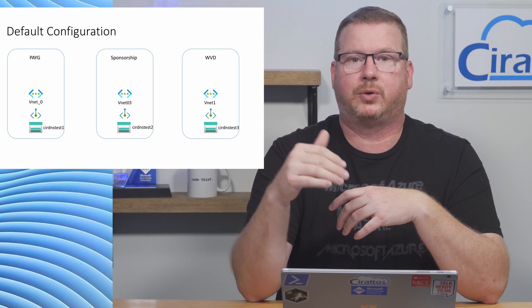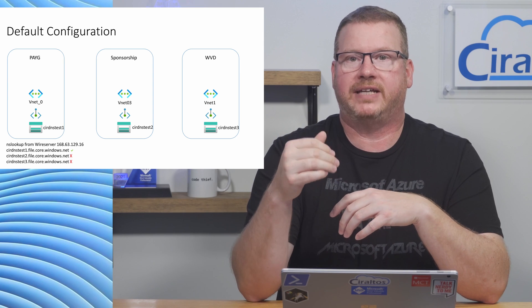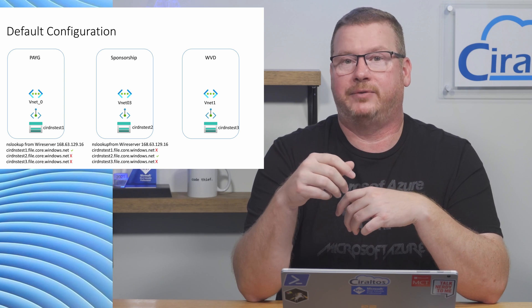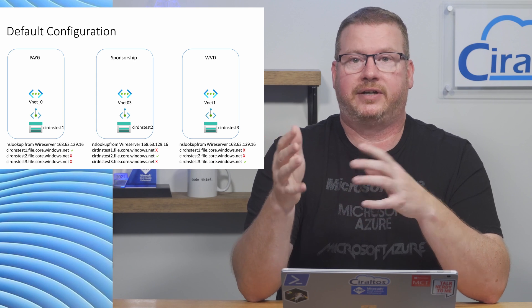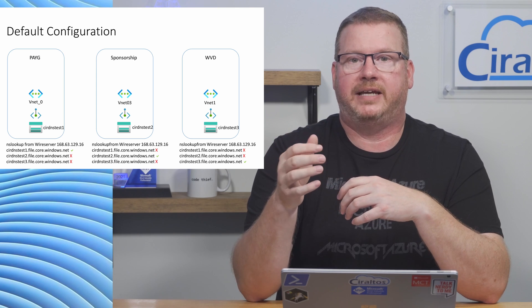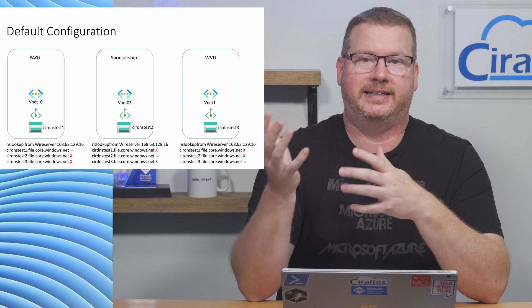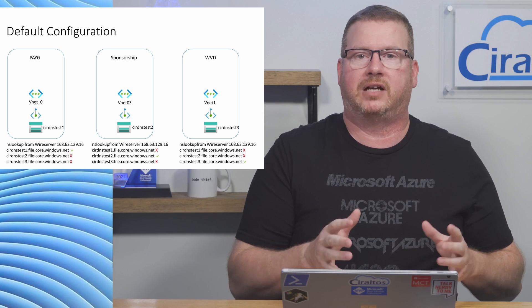Let's review private endpoints and DNS quickly before we set up the solution. This example will use three subscriptions, each with a VNet and a storage account attached to that VNet. By default, we can resolve the private endpoints attached to each VNet from that VNet with the wire server IP address. The wire server IP is a special IP address that services in Azure interact with — it's a public IP address only available from Azure that provides services such as DHCP and DNS.